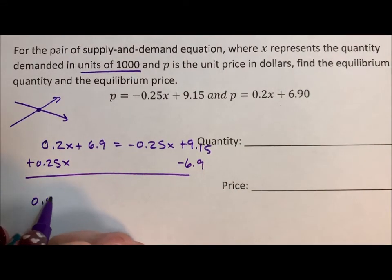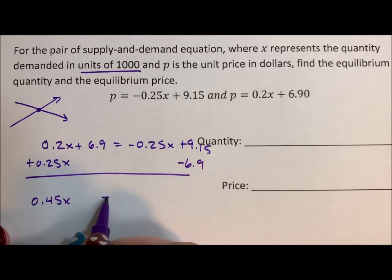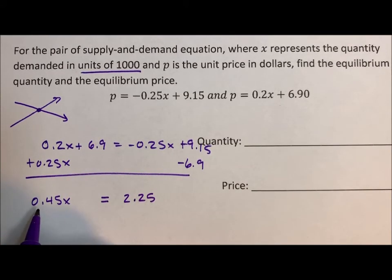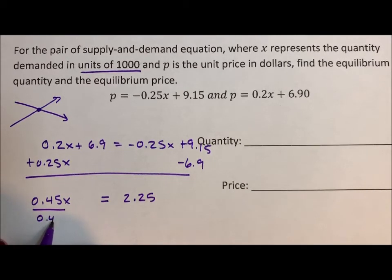I'm going to get 0.45x is equal to 2.25. When I divide by 0.45, I'm going to get that x is equal to 5.